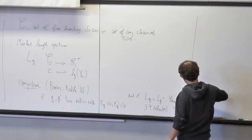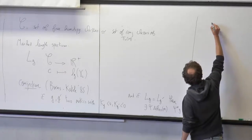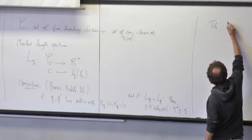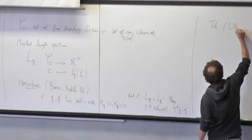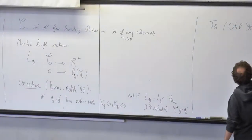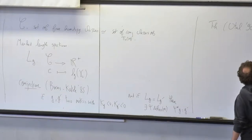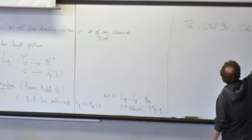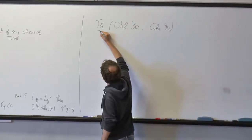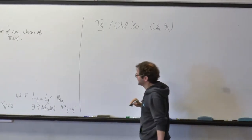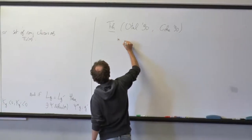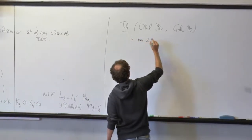This conjecture was solved in dimension two. It was a theorem by Otal in 1990, and there is also a proof by Croke which used some results of Feldman and Einstein, which say that in dimension two the conjecture is actually true.